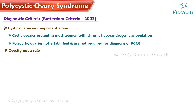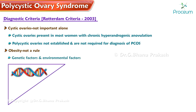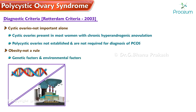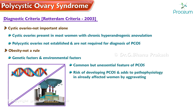Cystic ovaries are not important alone. Although cystic ovaries are present in most women with chronic hyperandrogenic anovulation, polycystic ovaries are not required for diagnosis of PCOS. Obesity is also not a rule — it relates primarily to genetic and environmental factors and is a common but unessential feature. However, obesity does contribute to the risk and aggravates insulin resistance and hyperinsulinemia in affected women.